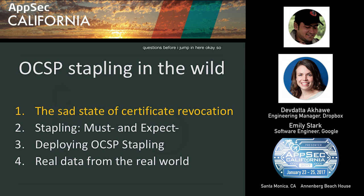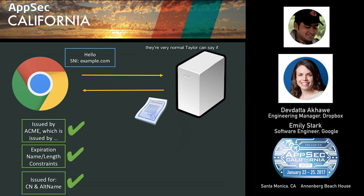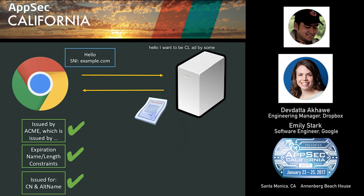I thought we'd get the sad stuff out of the way at the beginning — I'll tell you about all the things that didn't work. First, a bit of background about TLS and certificates. In a normal TLS handshake, a browser and server interact when the browser wants to send an HTTPS request. The browser begins setting up a TLS connection: the client says hello, provides parameters it supports, and in this example uses a TLS extension called SNI, or Server Name Indication, to indicate it wants to connect to example.com.